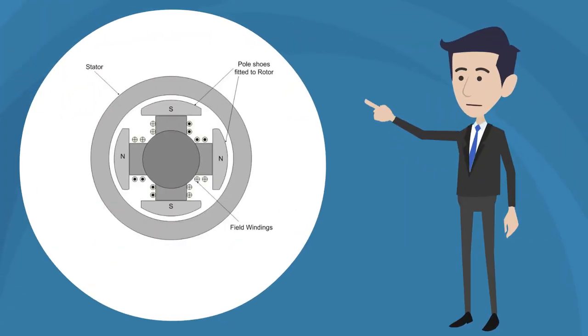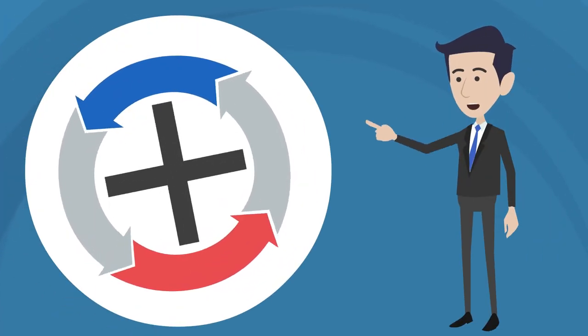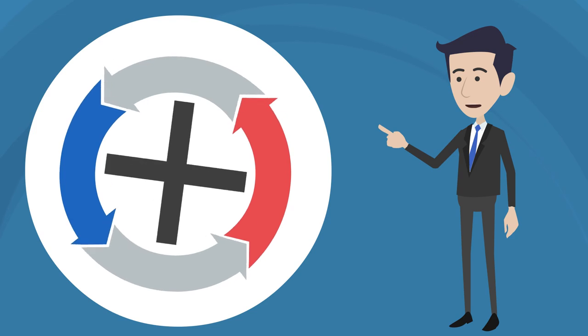Now to a 4-pole, which has 4 magnetic poles, twice as many as the 2-pole, and it therefore generates 2 electrical cycles every time it rotates.